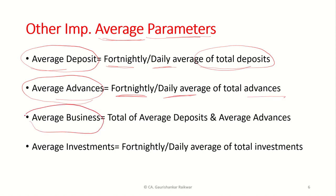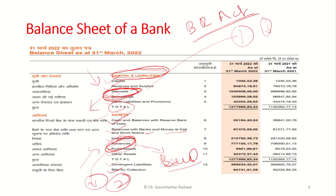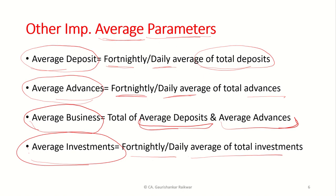Then there is average business, which means the total of average deposits and average advances. The next important parameter is average investment. If we go back and look at the balance sheet of a bank, after the balance with banks and money at call, there is a heading for investment. This is also a key financial parameter used for calculating certain ratios. Average investment is again the daily or fortnightly average of total investment.